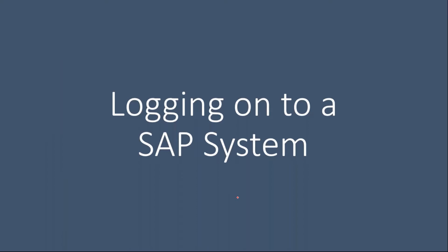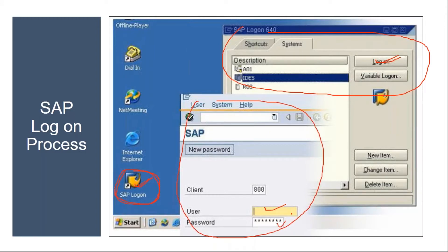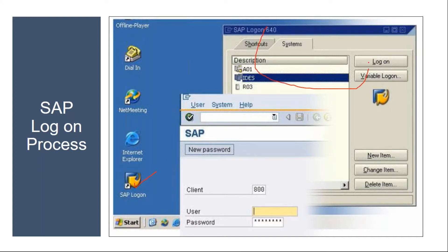First we'll talk about logging on to the SAP system. To log on, you should have the SAP Logon Pad installed on your laptop or desktop. Once you have this, you need to double-click on it and you will get the Logon Pad screen. Here you need to select the server you want to log in to, then click on the Logon button. When you click Logon, it will give you a screen to enter your user ID and password, which you will be provided with.